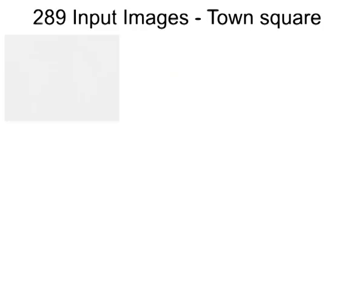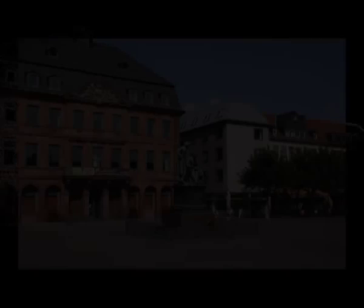The town square data set shows strong parallax between the statue and the surrounding houses. Uncertain regions are again handled smoothly by the ambient point cloud.